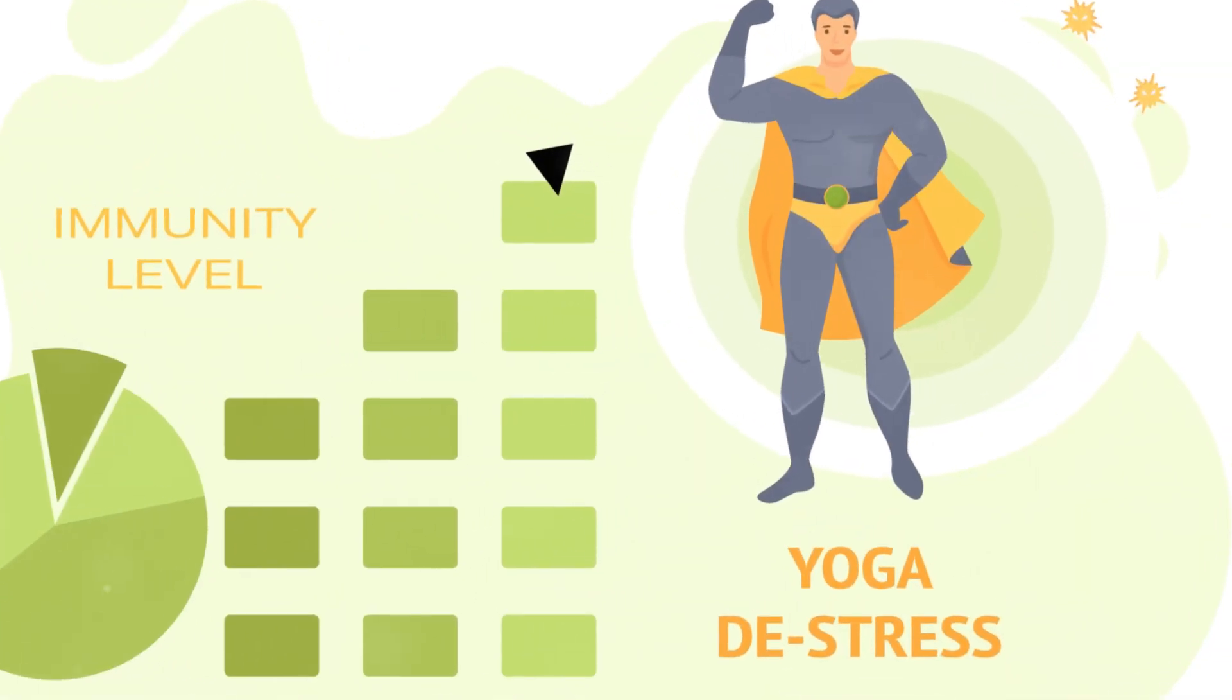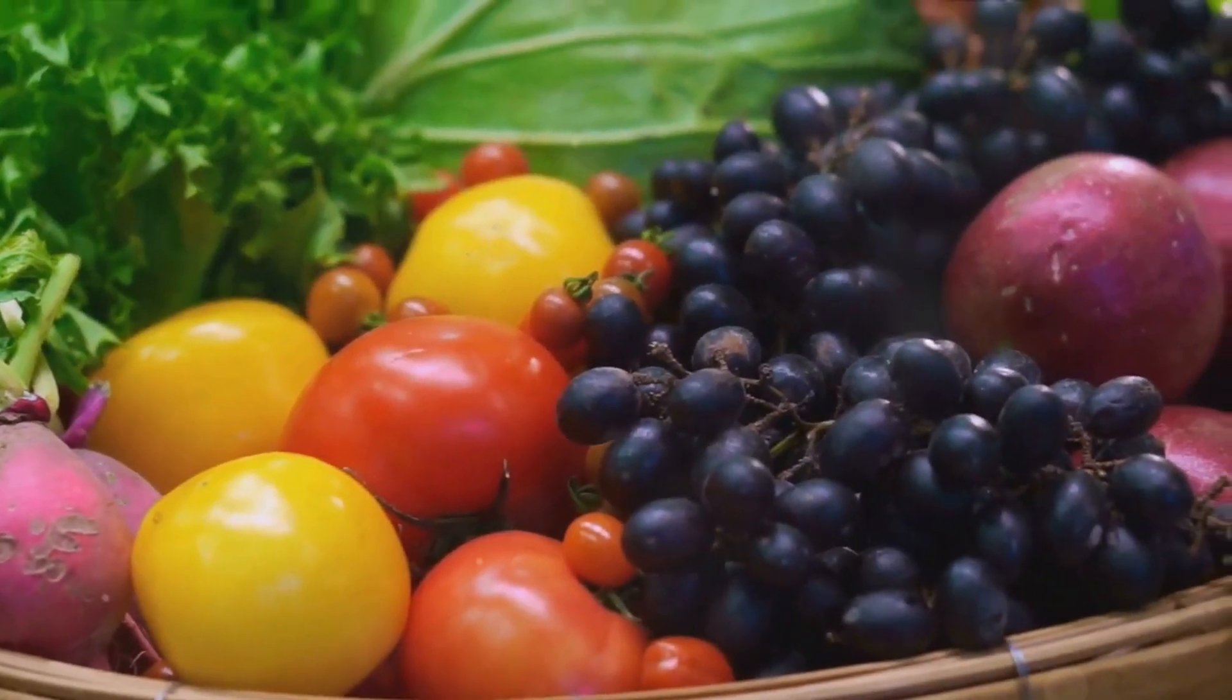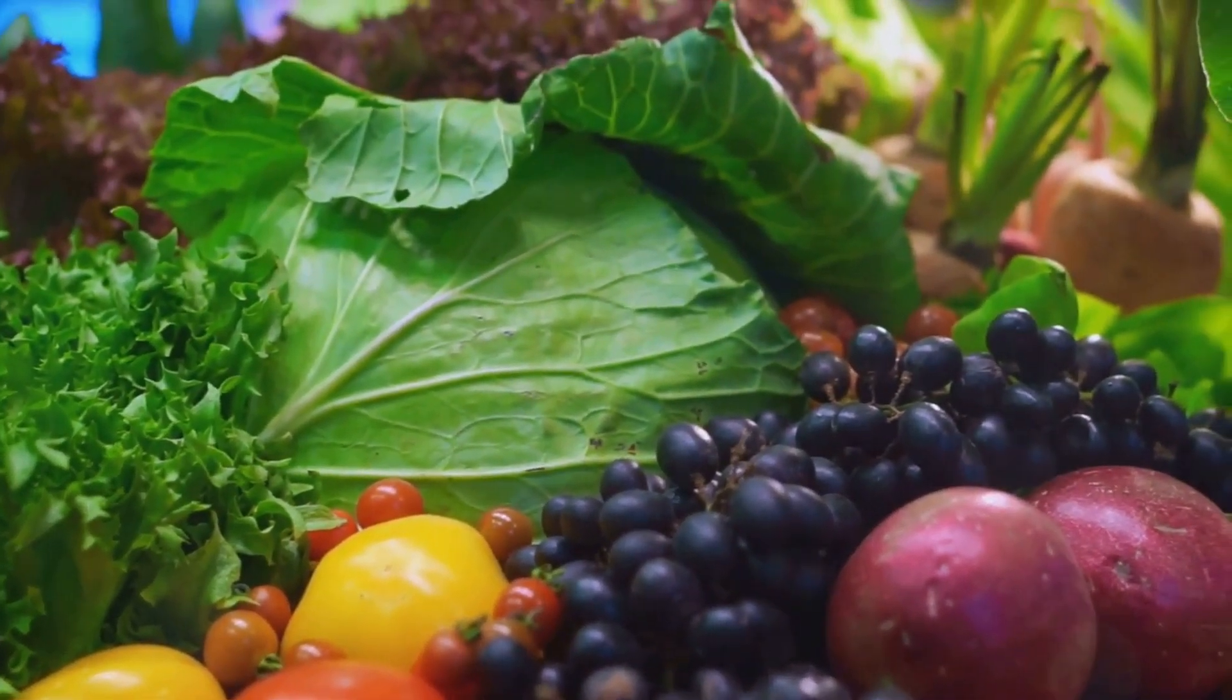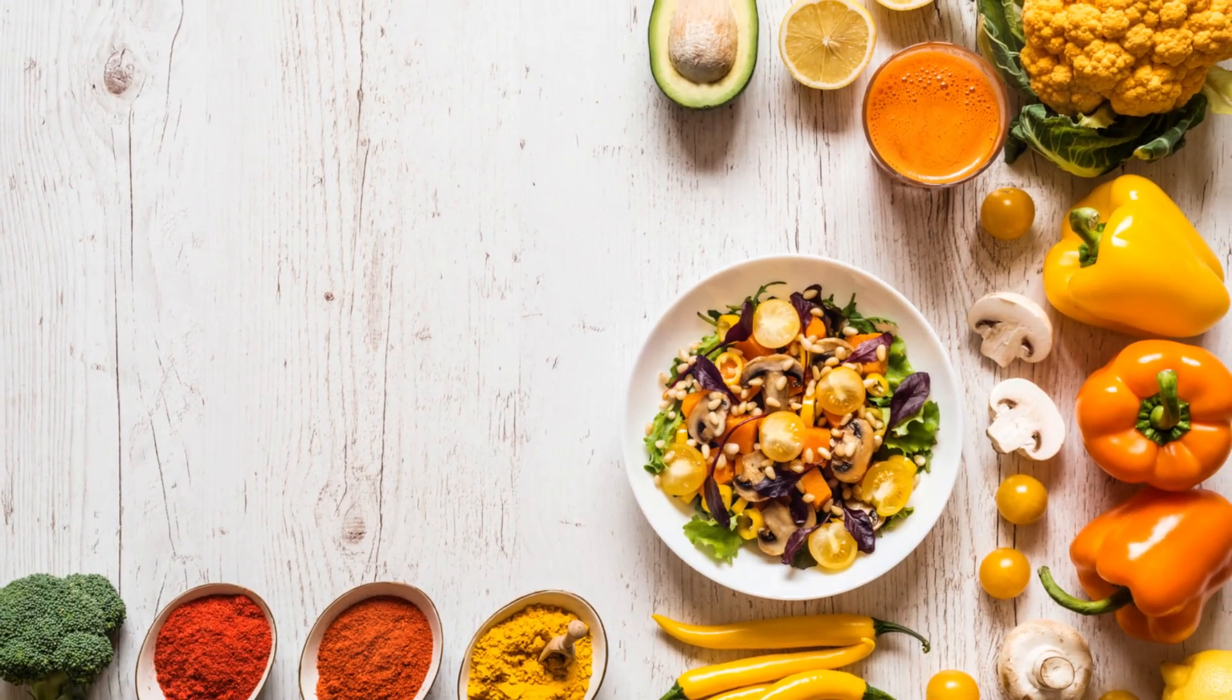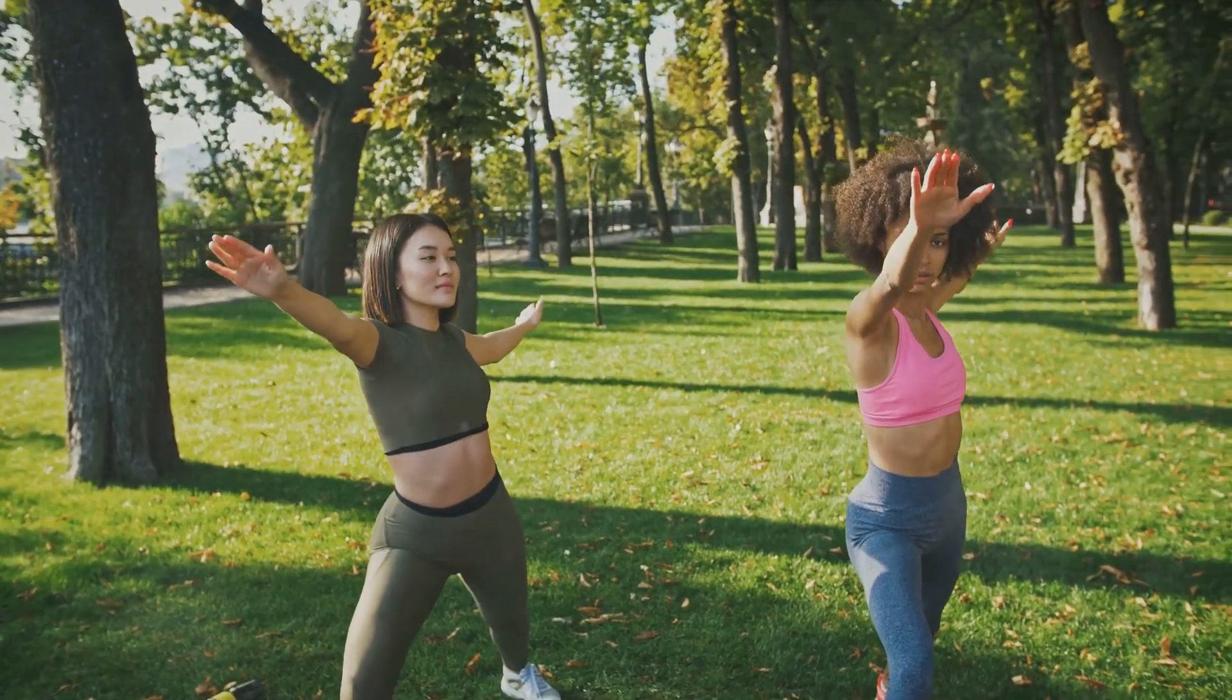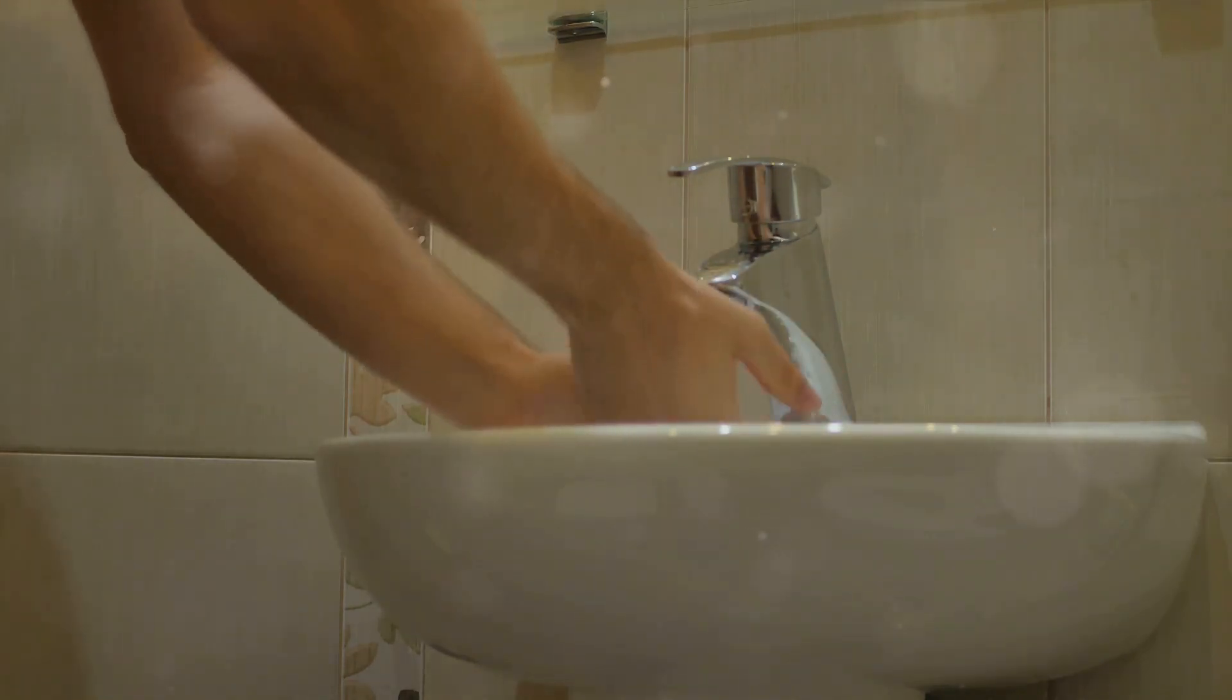Just as superheroes need the right fuel and rest to keep them at their best, our white blood cells also need proper care to function optimally. These defenders of our body thrive on a healthy lifestyle. Regular exercise, a balanced diet and adequate rest all contribute to the strength and resilience of our immune system, supporting the production and function of white blood cells. Stress can be a villain to our body's superheroes. Limiting stress helps maintain a healthy immune response. And, of course, proper hygiene, including regular hand washing, remains a fundamental strategy in reducing the risk of infections.